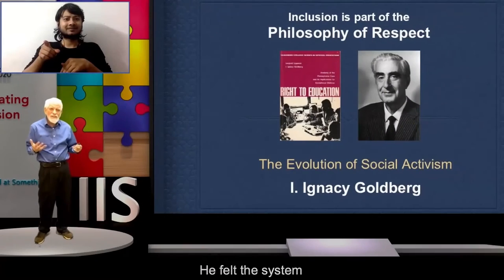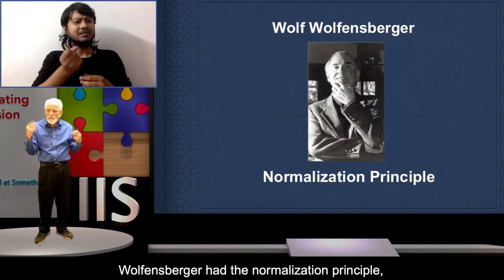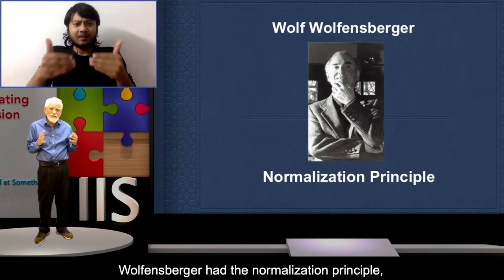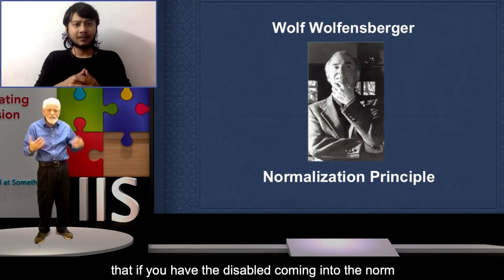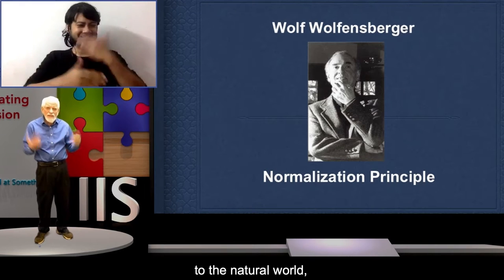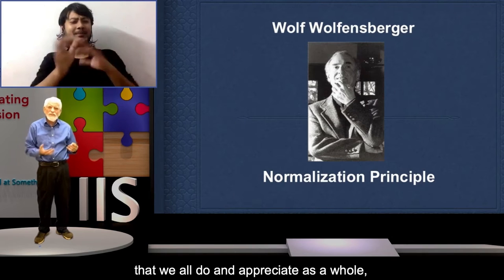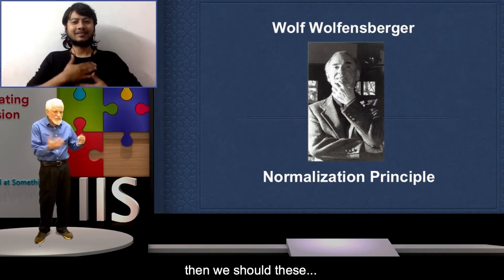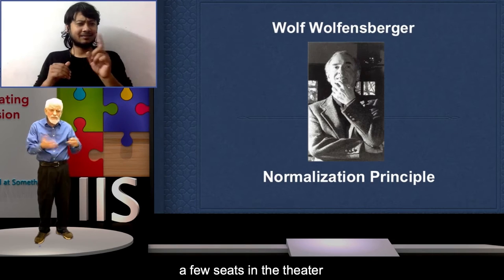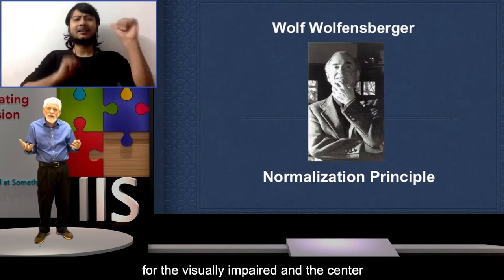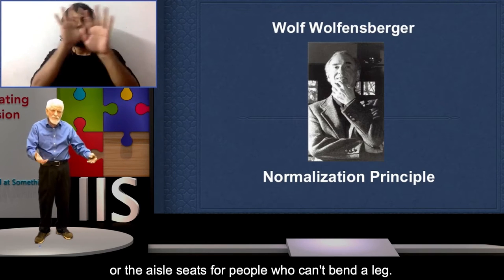He felt the system should accommodate, or as Wolfensberger said, normalize. Wolfensberger had the normalization principle, which basically says that if you have the disabled coming into the norm, to the natural world, to the everyday activities that we all do and appreciate as a whole, then disabled people should not be embarrassed. It should be seamless.